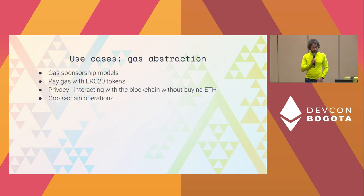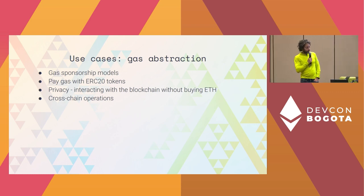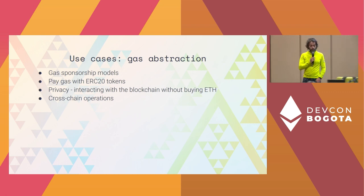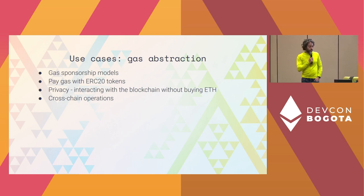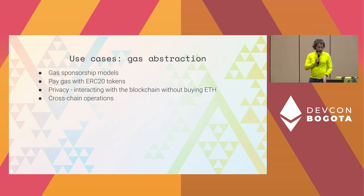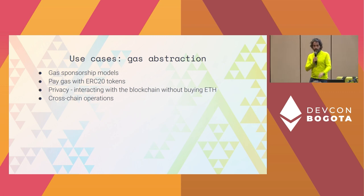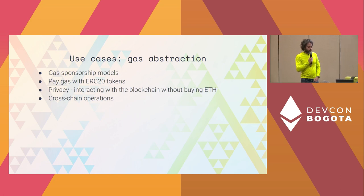Another obvious use case is paying gas in any ERC-20 token, anything that has value. If I pay you in USDC, there's no reason you'd also need ETH in your account to move that USDC and pay your bills with it. Like when someone sends you a PayPal transfer, they don't have to send you some other PayPal tokens so you can move your US dollars elsewhere. Payment becomes a lot easier.